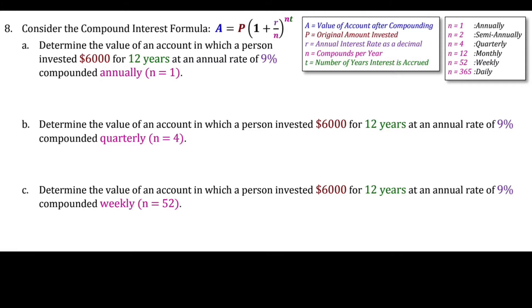Now we'll solve problems A, B, and C. Problem A says: determine the value of an account in which a person invested $6,000 for 12 years at an annual rate of 9% compounded annually. So we have A equals P, where P is the initial amount invested, $6,000, times 1 plus the rate.